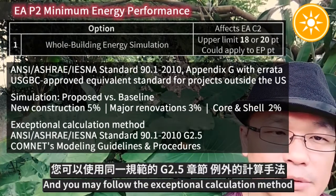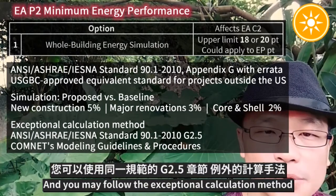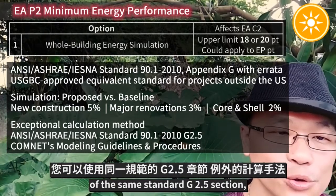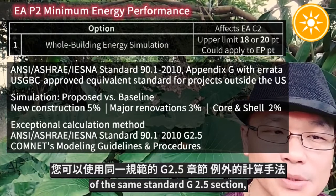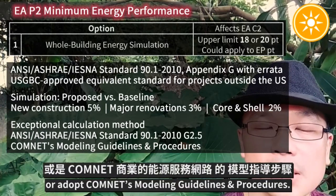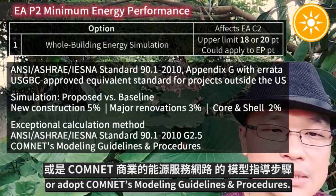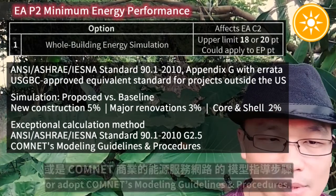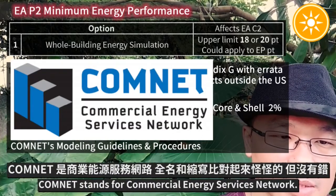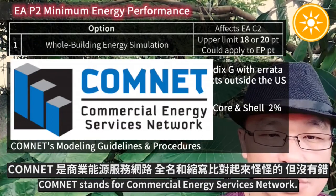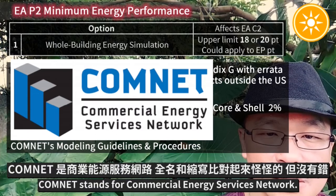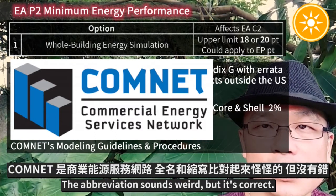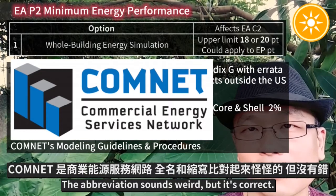Then you may follow the exceptional calculation method for the same standard Appendix G, section G2.5. Or you may adopt ComNet — Commercial Energy Services Network — Modeling Guidelines and Procedures.